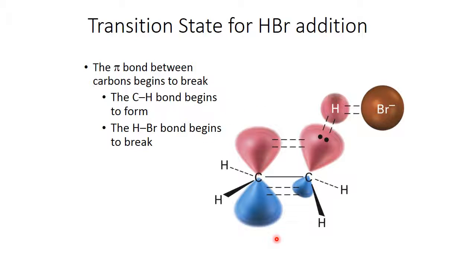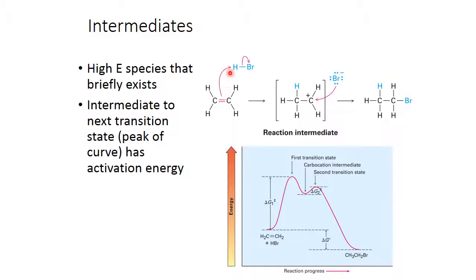Here's a picture of the transition state for hydrobromic acid addition. The pi bond is in the middle of being broken. The bond from carbon to hydrogen is in the middle of being formed. The bond between hydrogen and bromide is in the middle of being broken. In a transition state — the highest energy possible — you have the most bonds broken without any new bonds being fully formed; they're beginning to form. The transition state is intermediate between here and here. The intermediate is this little resting state that reacts quickly due to a small activation energy to form the product.